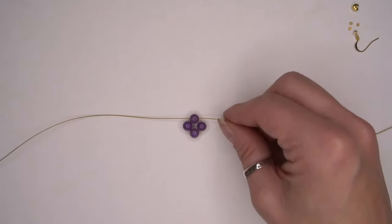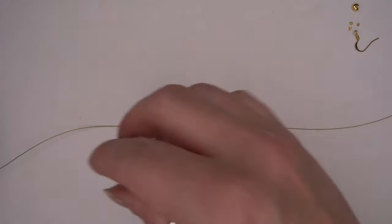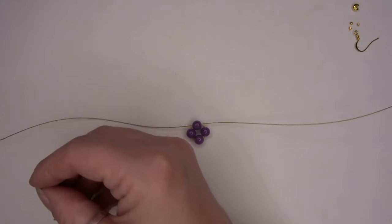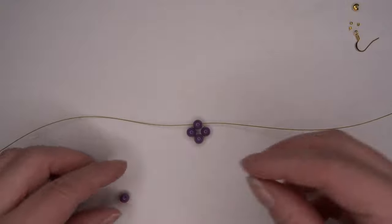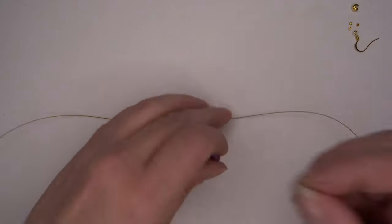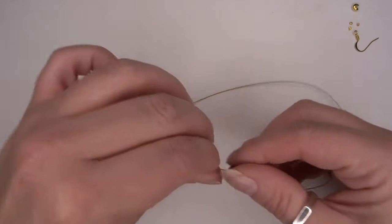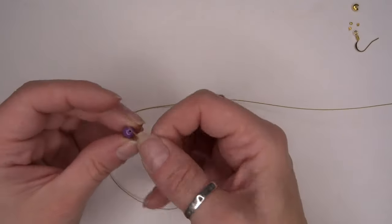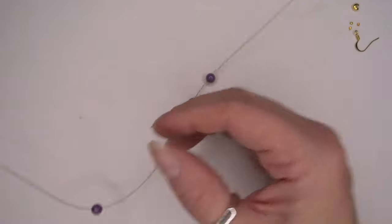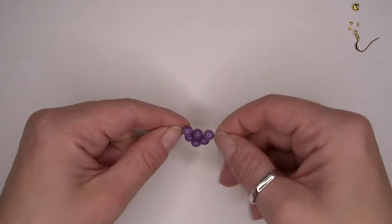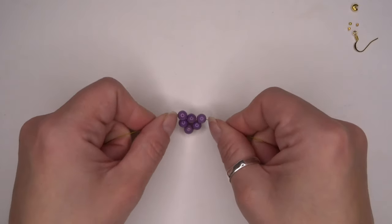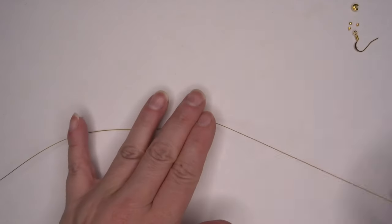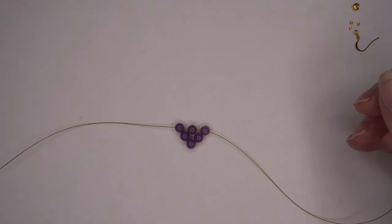So now we're going to add on two more beads, one on the left, one on the right. And as you can see here, we've created a little bit of a triangle shape. So we're just going to take one more bead.